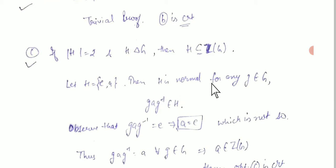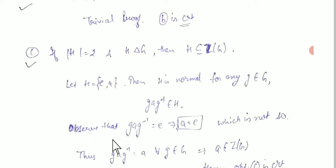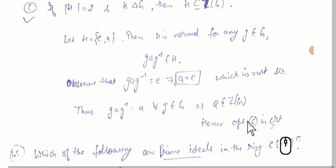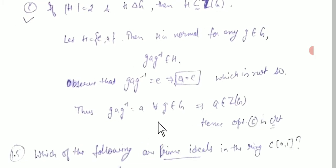For any g in G, if g·a·g⁻¹ belongs to H and we observe that a equals e when A is trivial, and g·a·g⁻¹ equals a, then hence option C is correct.